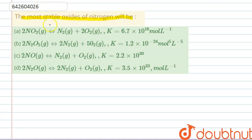We are given four reactions: A, B, C and D. We are given different oxides of nitrogen: NO2, N2O5, NO and N2O. Also we are given the equilibrium constant for the reactions.